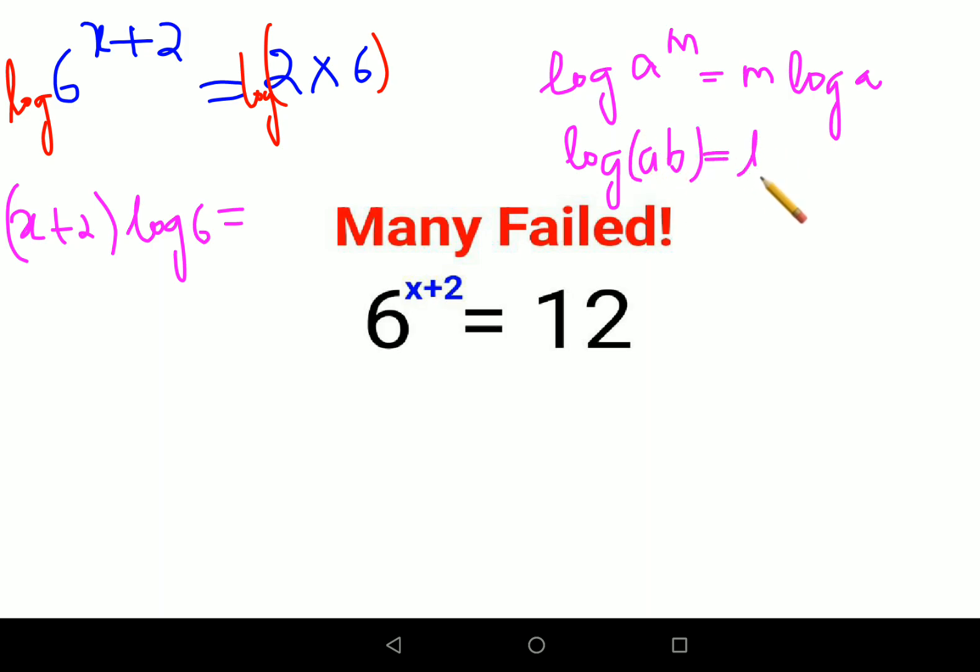This is equal to - now log of a into b product, log of a product will always be log of a plus log b. So this will look like log 2 plus log 6.